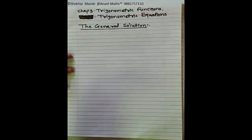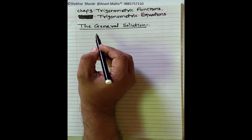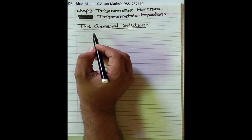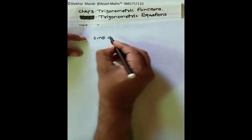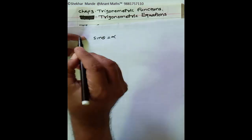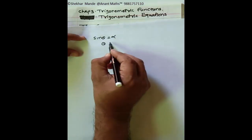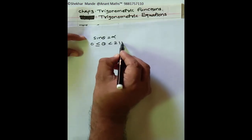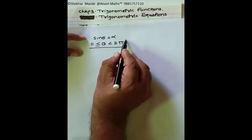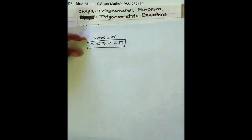In the principal solution, the solution lies between 0 to 2π, that is, theta lies between 0 to 2π. If sin θ equals something, suppose alpha, then theta lies between 0 to 2π. This type of solution is known as the principal solution.